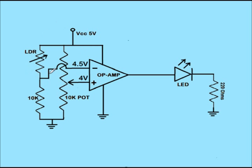Now consider the condition when the LDR is in dark. In this condition, the resistance of the LDR will be high and the voltage at the inverting terminal will drop — let us say it drops to 3.5 volts. In this condition, the output will be VCC, which is 5 volts, and the LED will glow. So if the LDR is in dark, the voltage drops, the output goes high, and the LED glows. This is the basic working principle of the circuit.